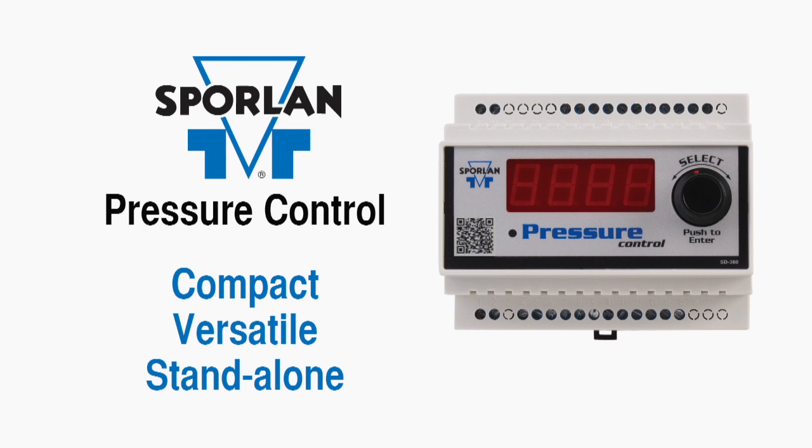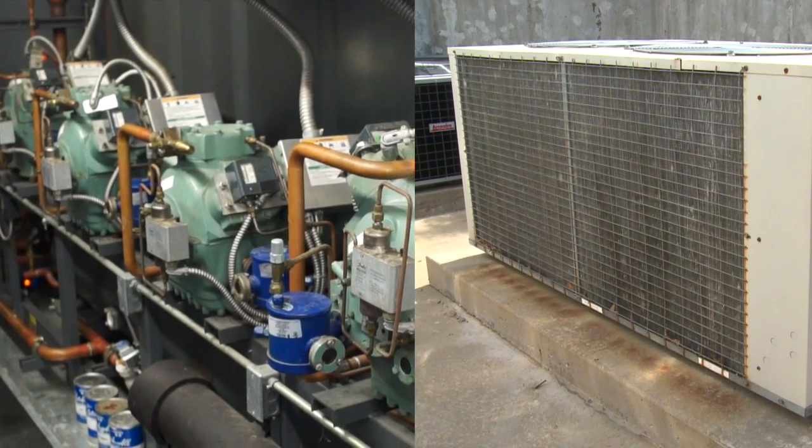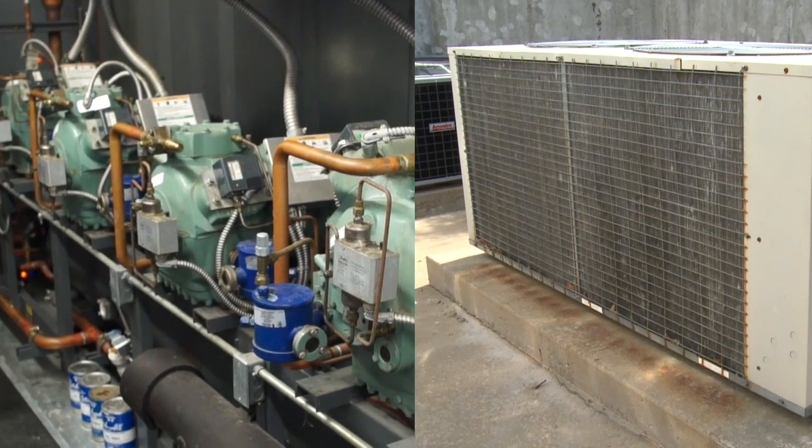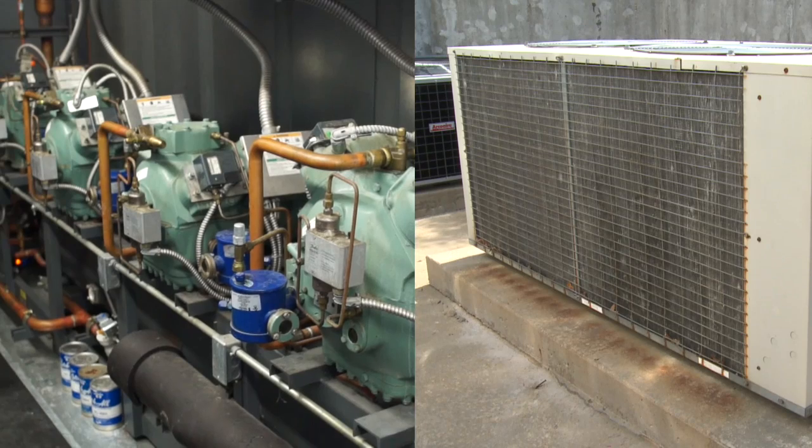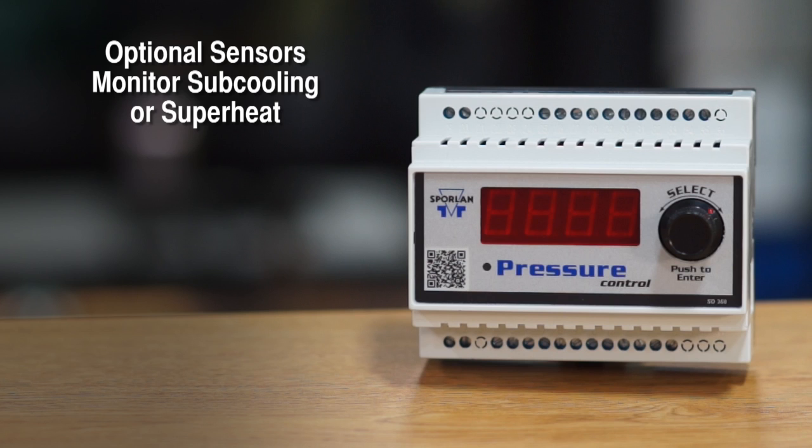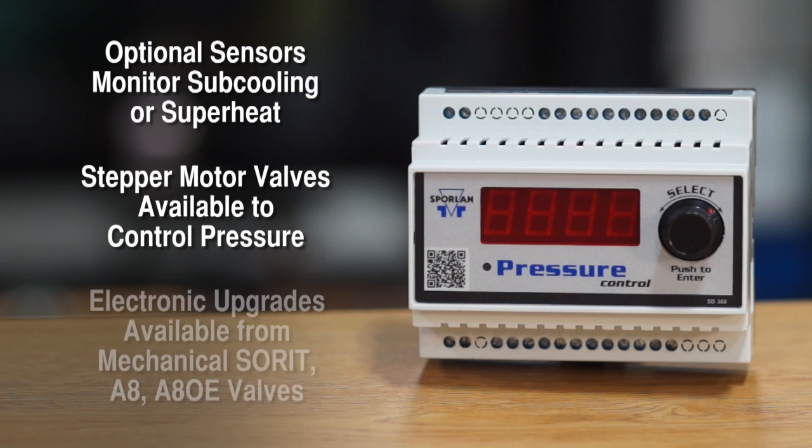The Sporlin pressure control is a compact and versatile standalone control used to regulate pressure at a specific location by controlling a Sporlin electric valve. Its operation is flexible enough to be configured to control both low side and high side pressure of a refrigeration or air-conditioning system. Optional sensors are available to show monitoring of sub-cooling or superheat. Stepper motor valves are available to control pressure throughout the system.